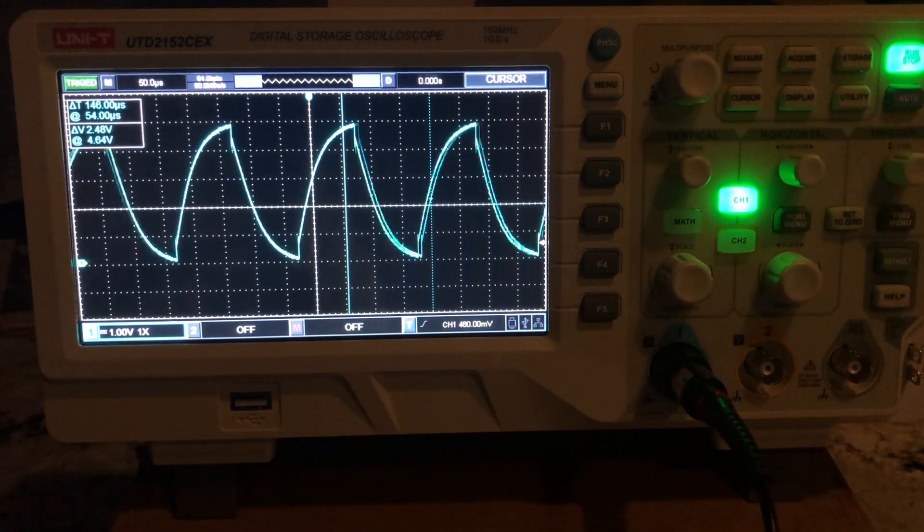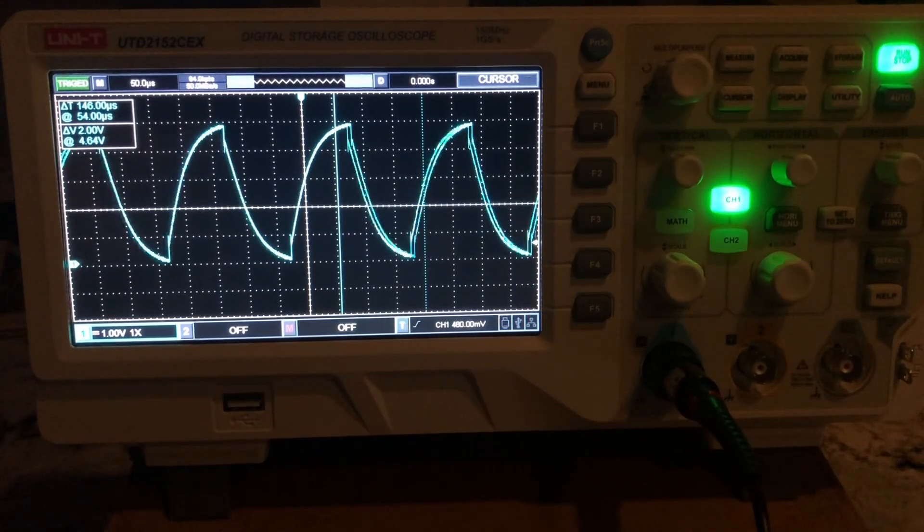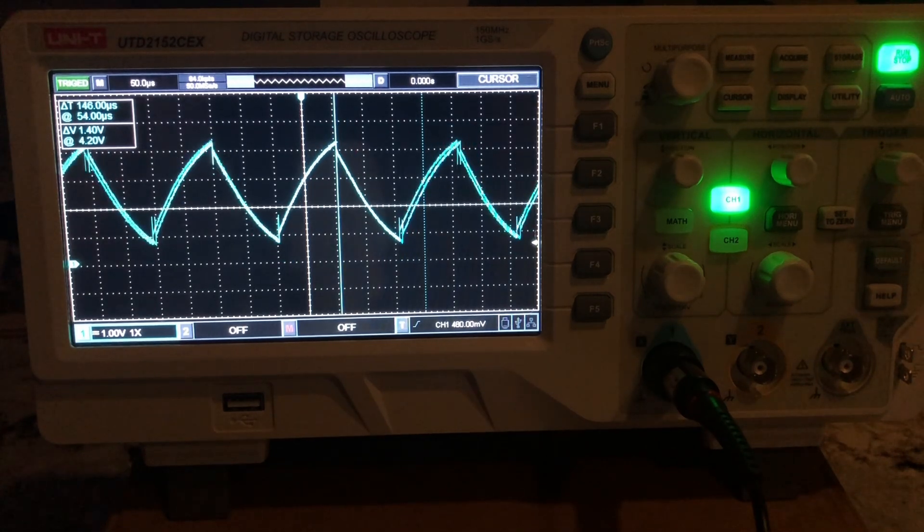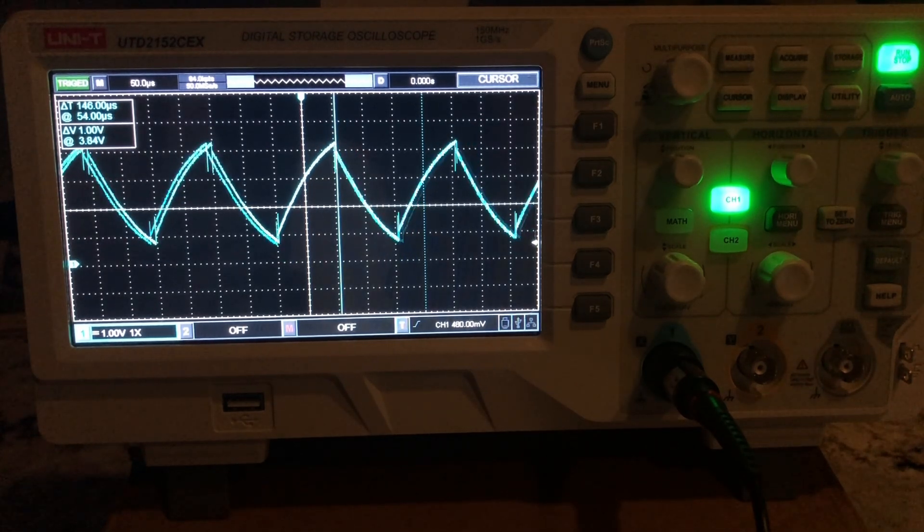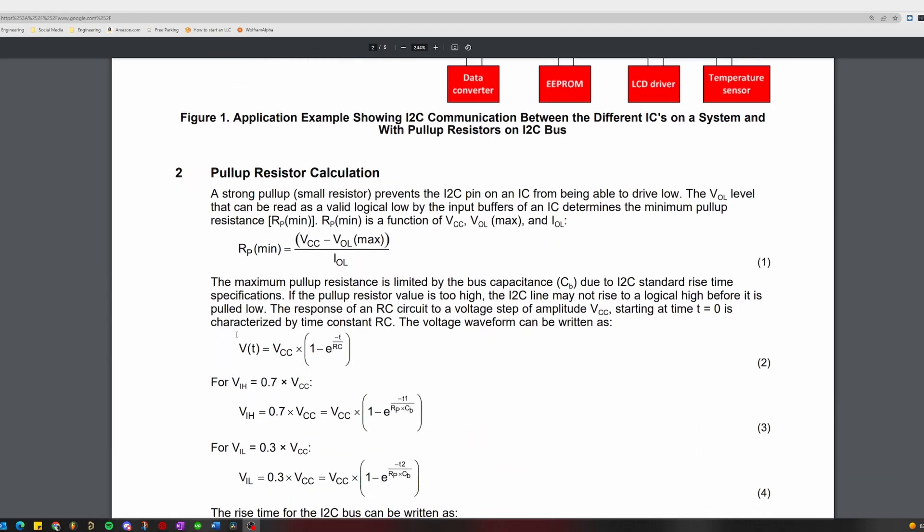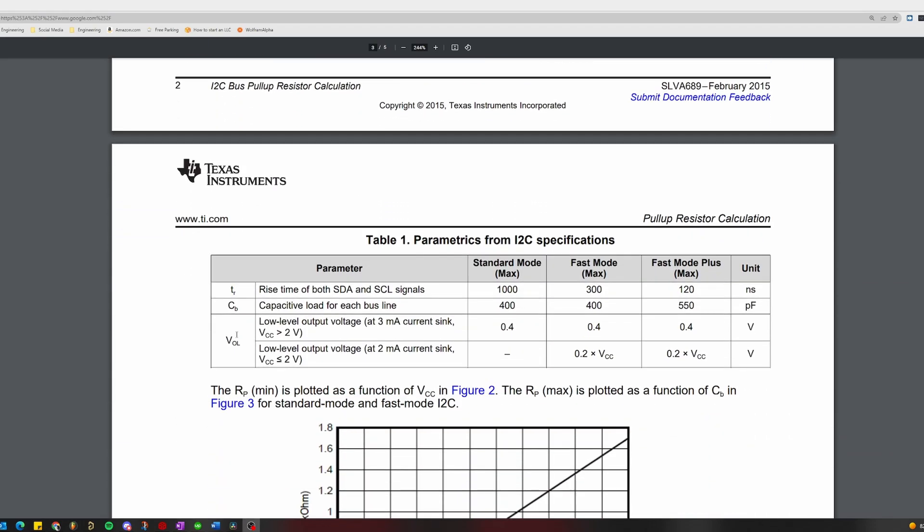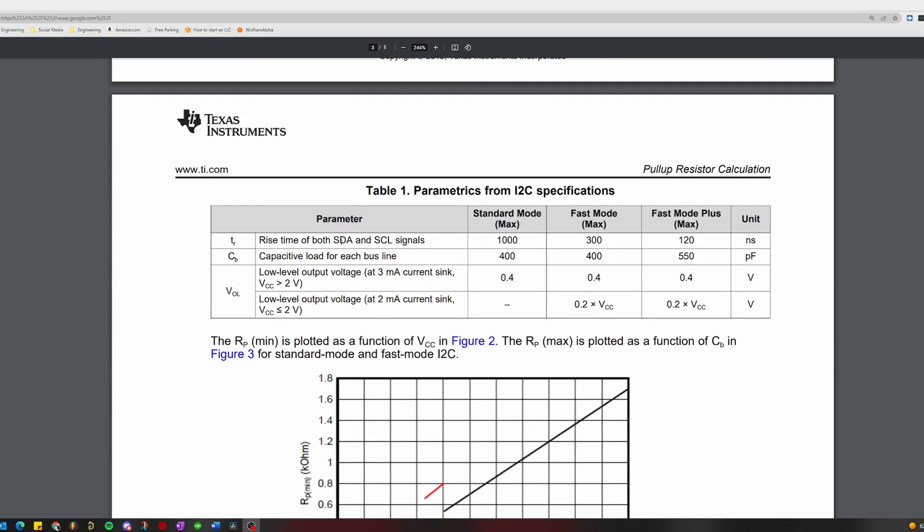Now that we have thoroughly laid out the problem we are faced with, let's start working on a solution to it. So how do we figure out what the correct value for our pull-up resistors should be? In the I2C bus specification sheet it tells us what the maximum allowable rise time is for the different modes of I2C communication.